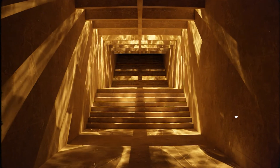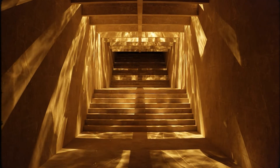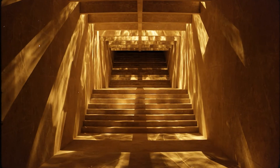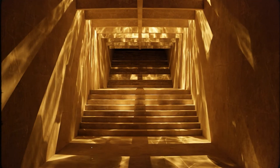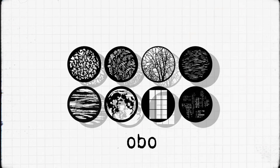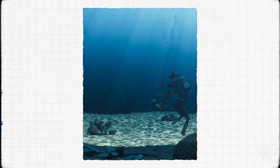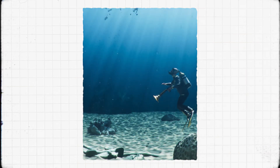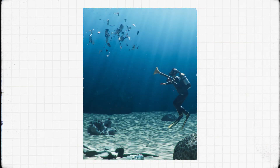A gobo is a revolutionary and cutting edge piece of technology that utilizes advanced photon controlling techniques to bend light and shadows. I'm just kidding — it's literally a piece of cardboard that blocks light. By putting this shape in front of our light, we're casting a shaped shadow onto our surface, essentially creating what we call a gobo.